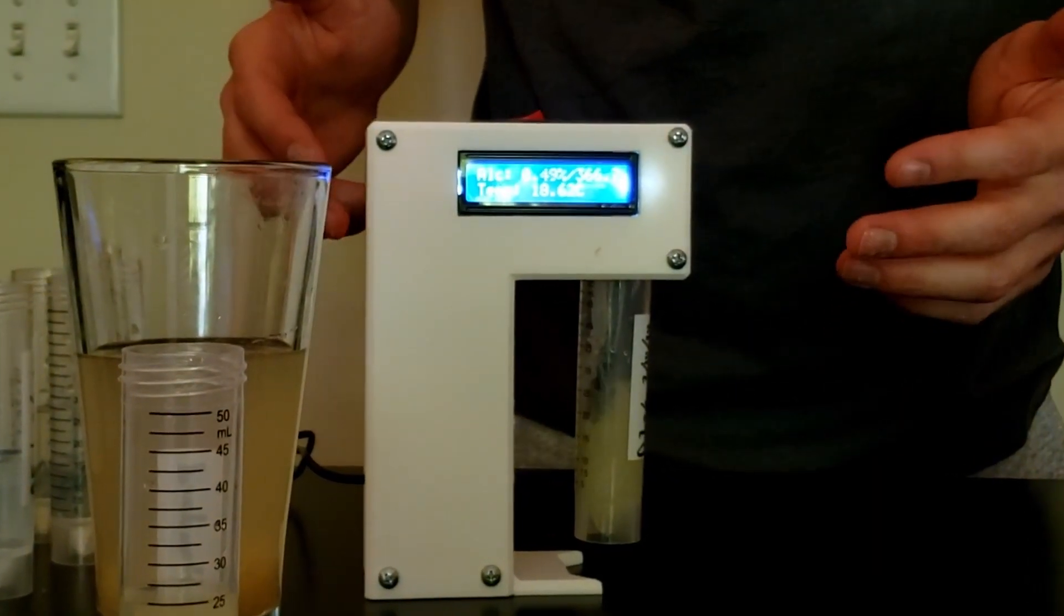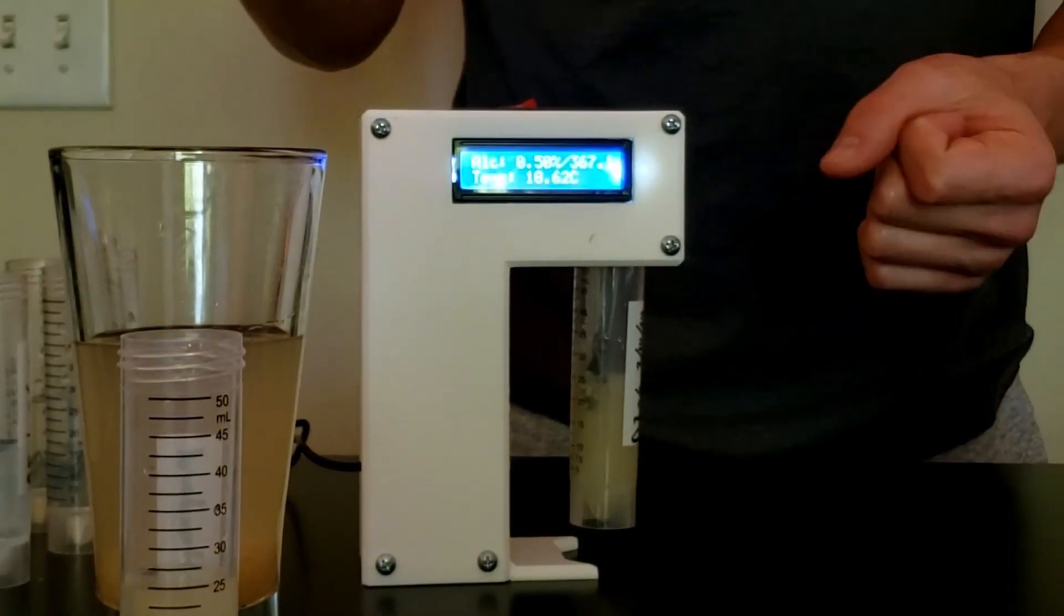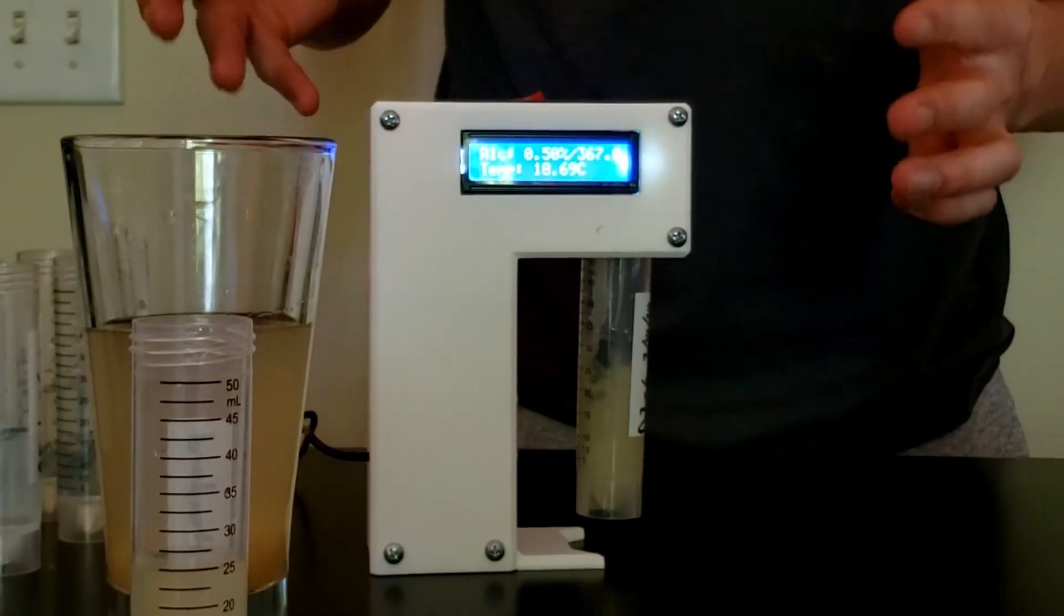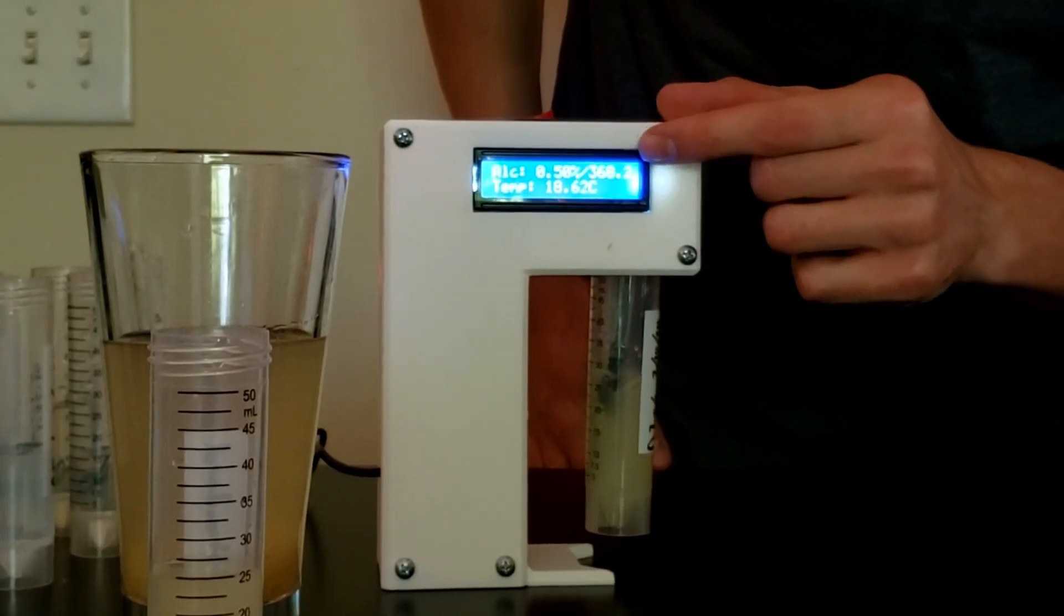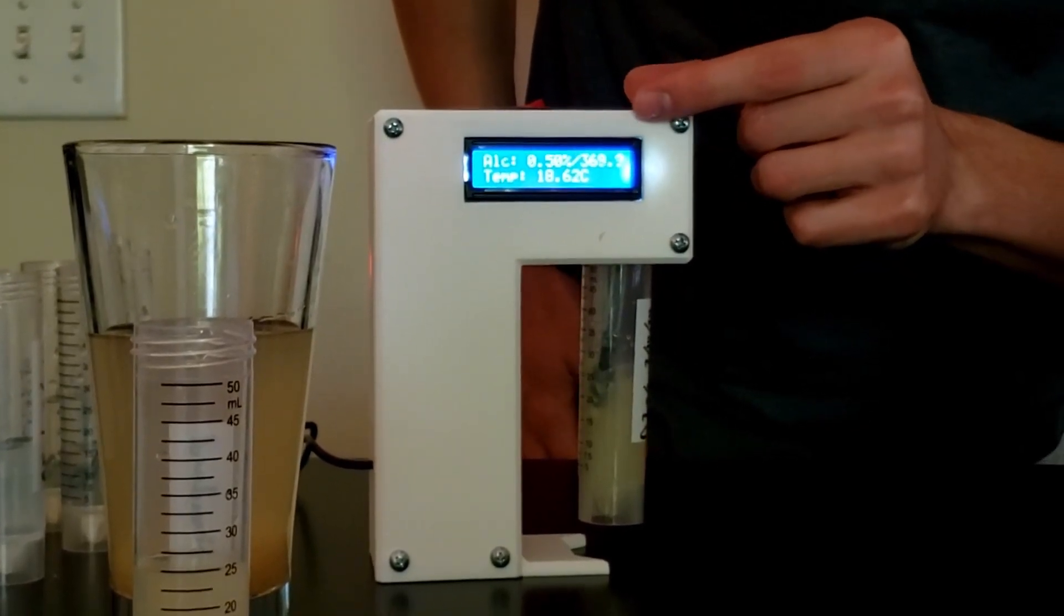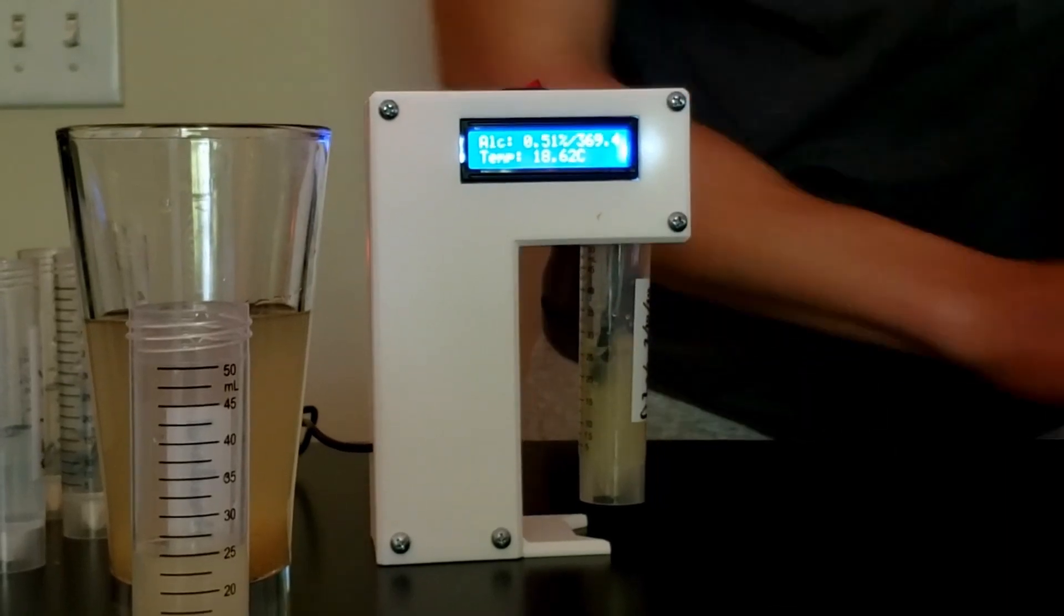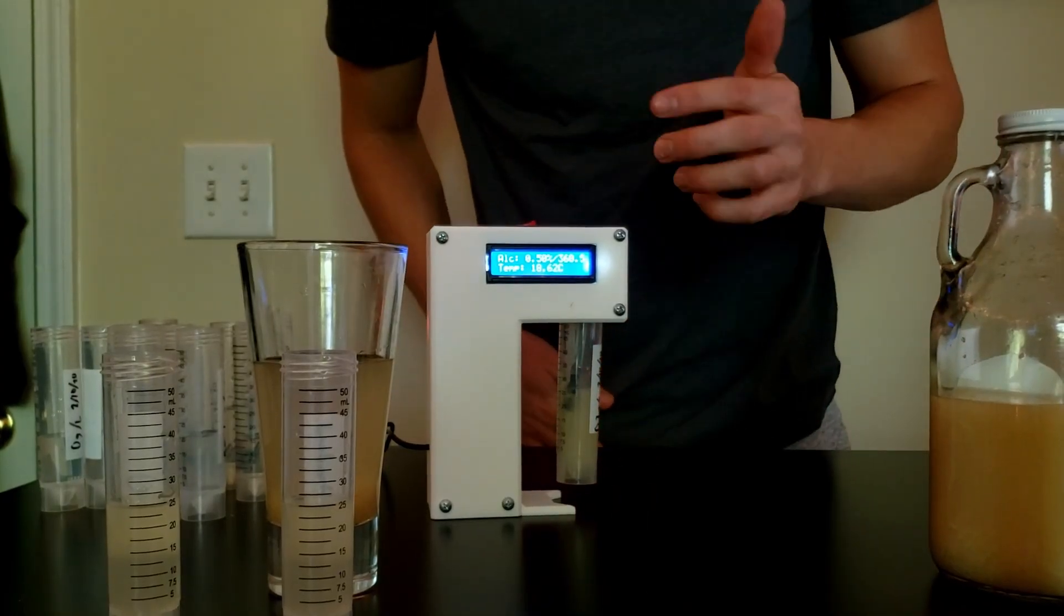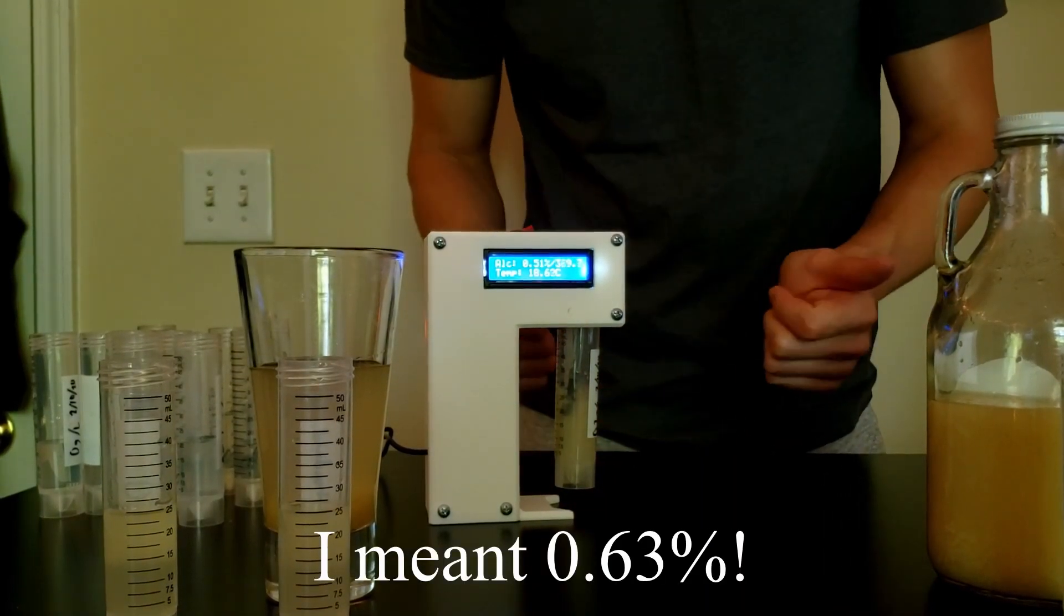So I was expecting the alcohol content of this ginger bug to be pretty high. You saw how much it fizzed when I opened it at the beginning. I expected this fermentation to be pretty active, maybe even alcohol content of 5 or 6%. However, you can see from the display that we're getting a reading of about 369, maybe 370. So we're going to type that into our calculator and see what alcohol percentage we get. A raw reading of 370 gives us an alcohol content of 0.63%, which is pretty cool.